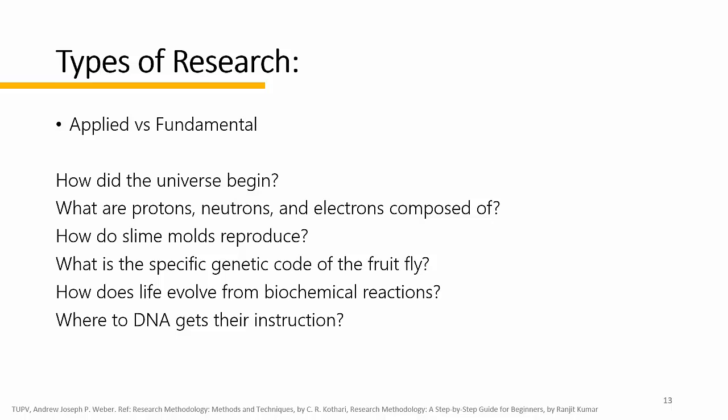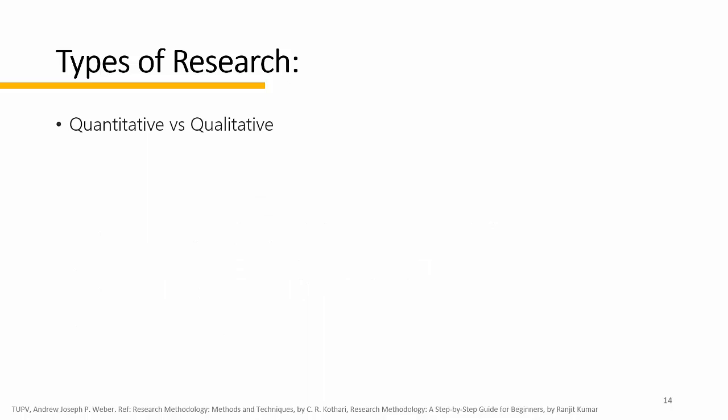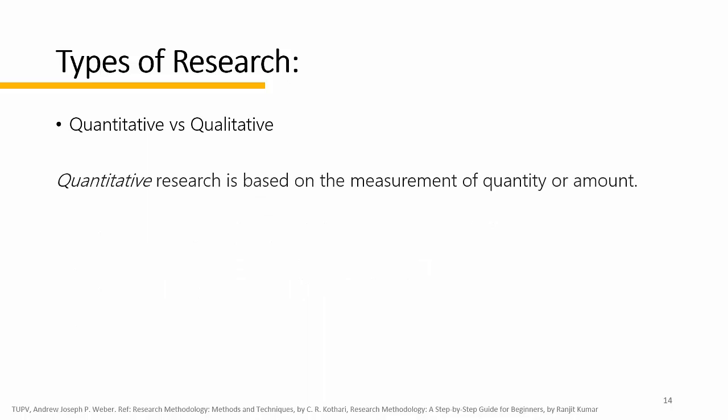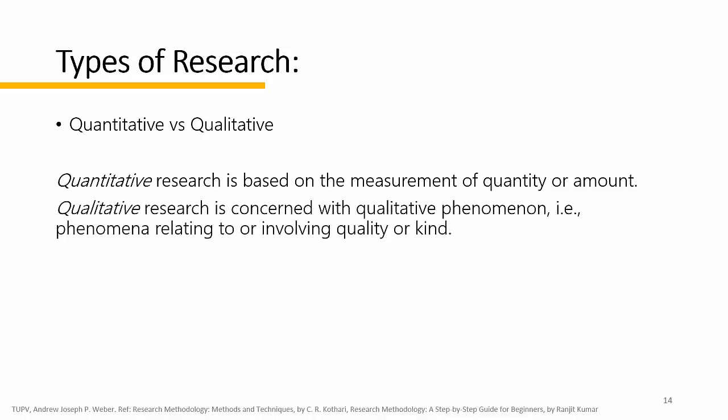Research can also be quantitative or qualitative. Quantitative research is based on the measurement of quantity or amount, while qualitative research is concerned with phenomena relating to or involving quality. For example, when we are interested in investigating the reasons for human behavior — why do people think or do certain things — motivation research can answer these questions, which is an important type of qualitative research.